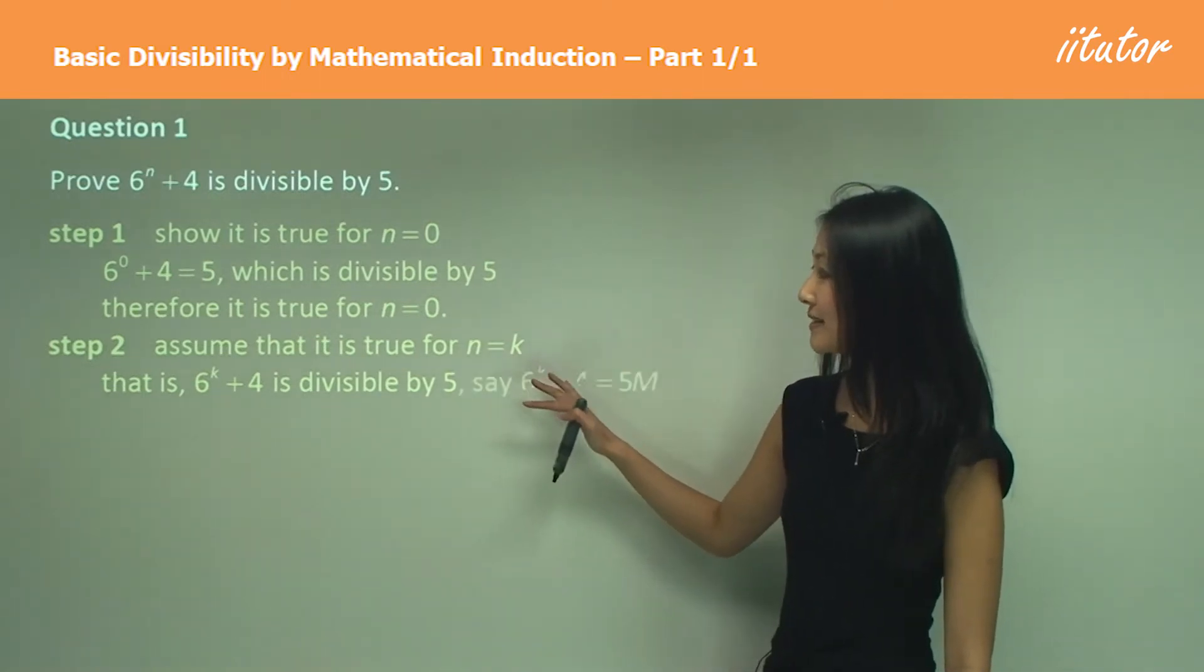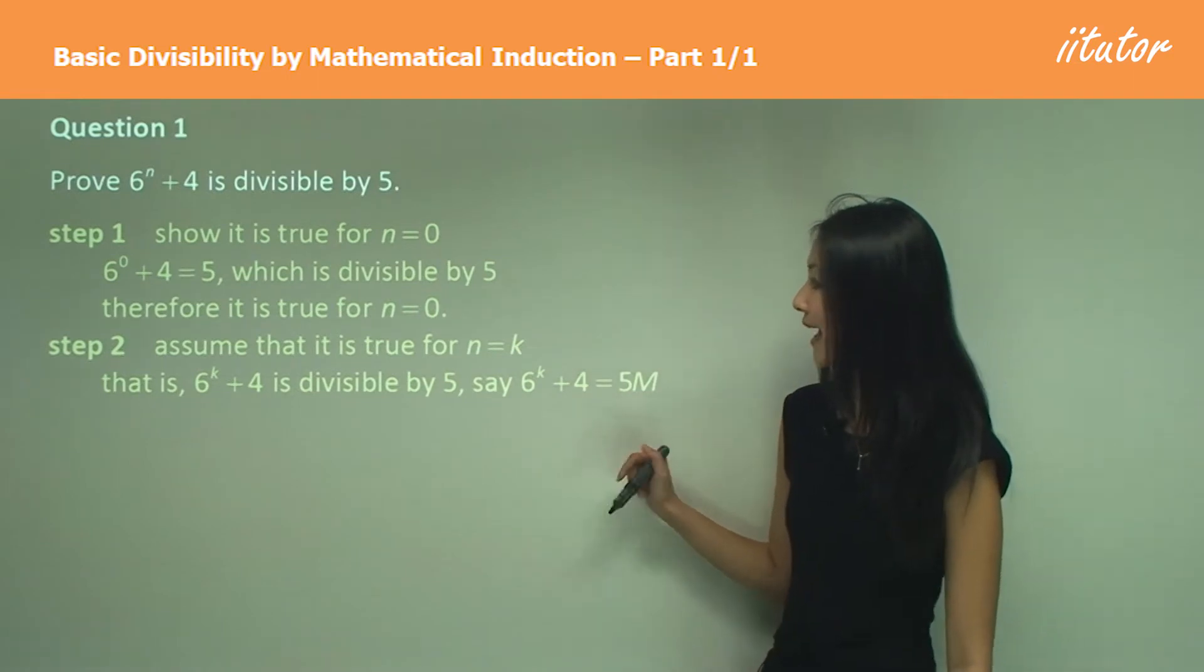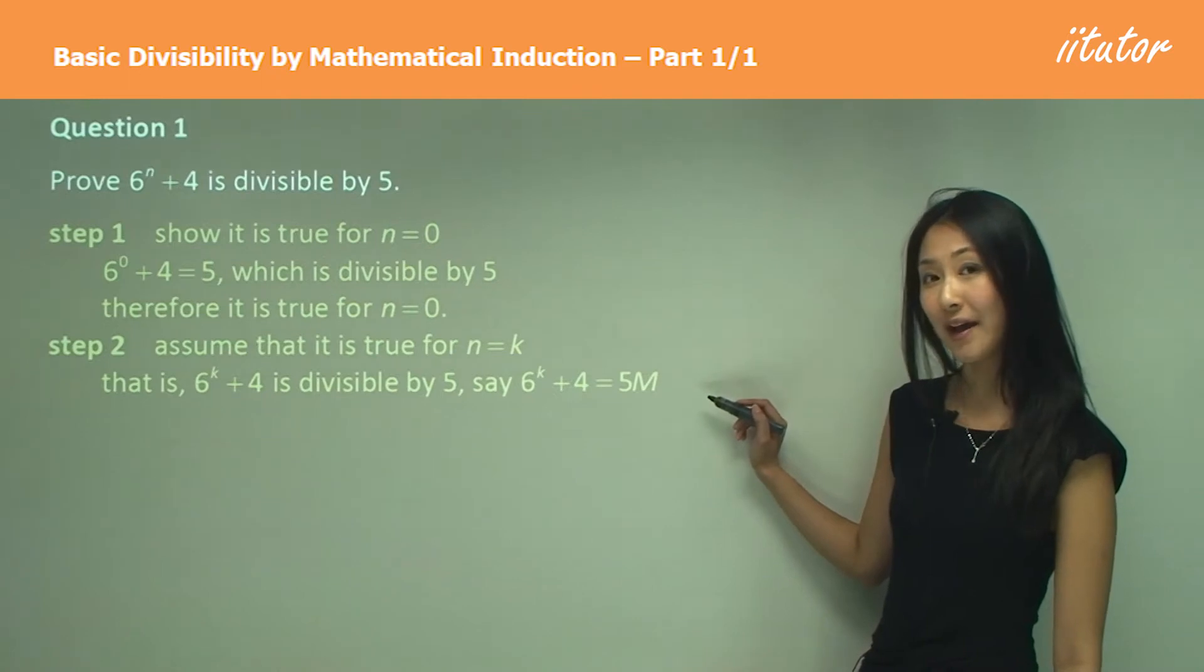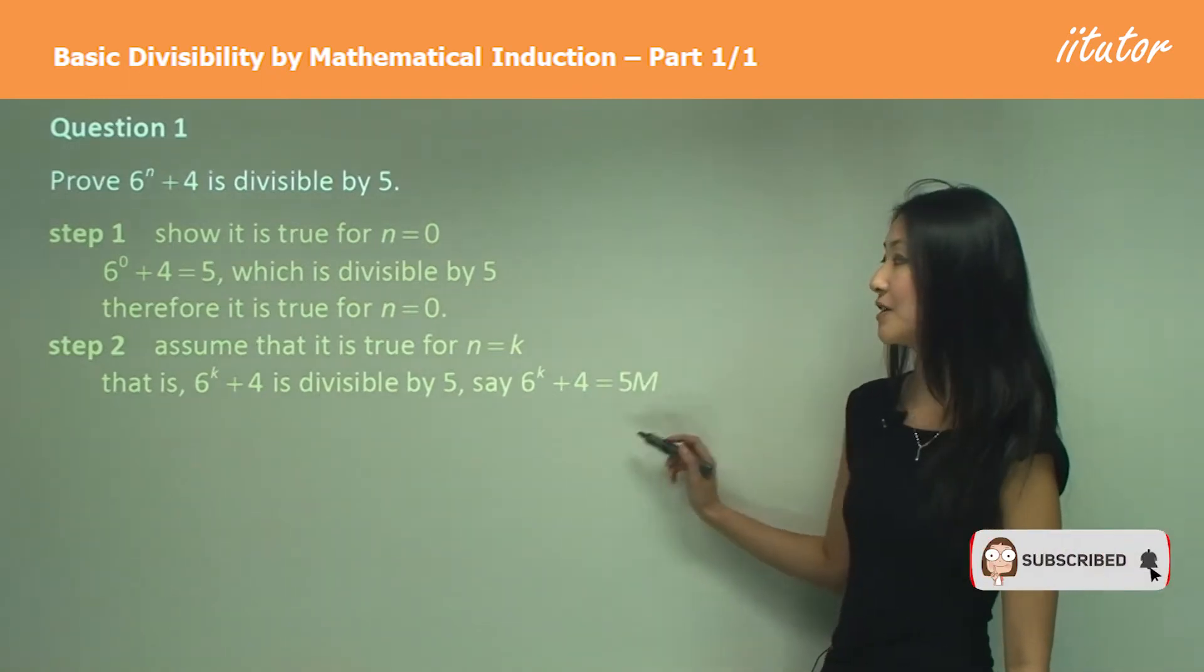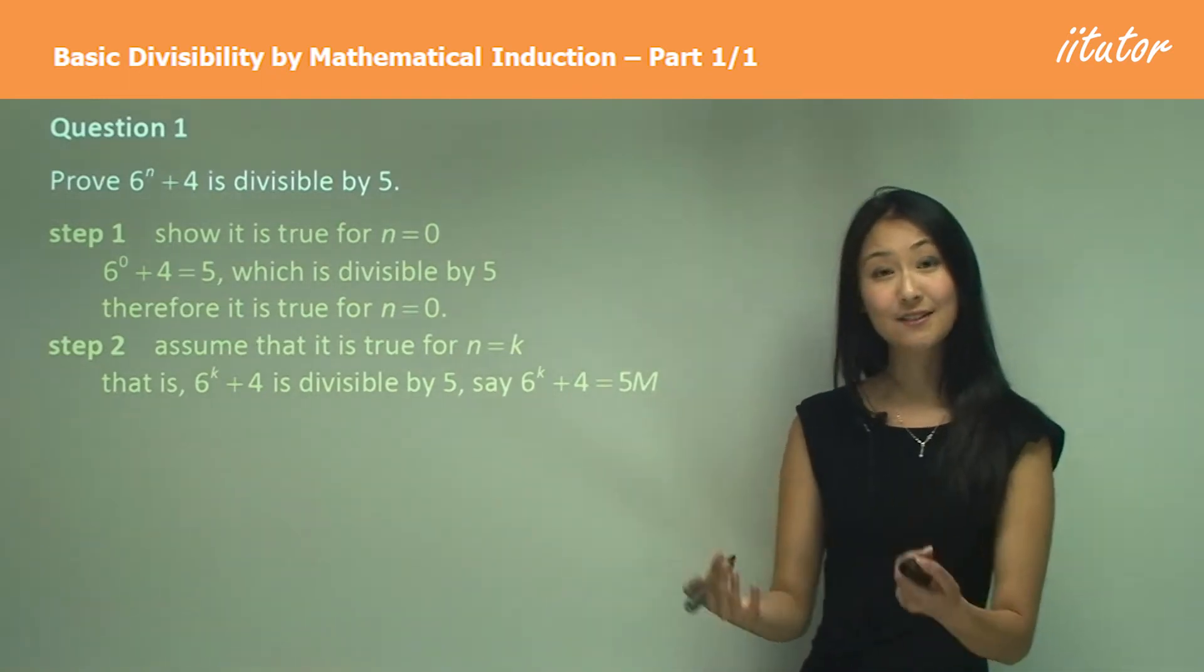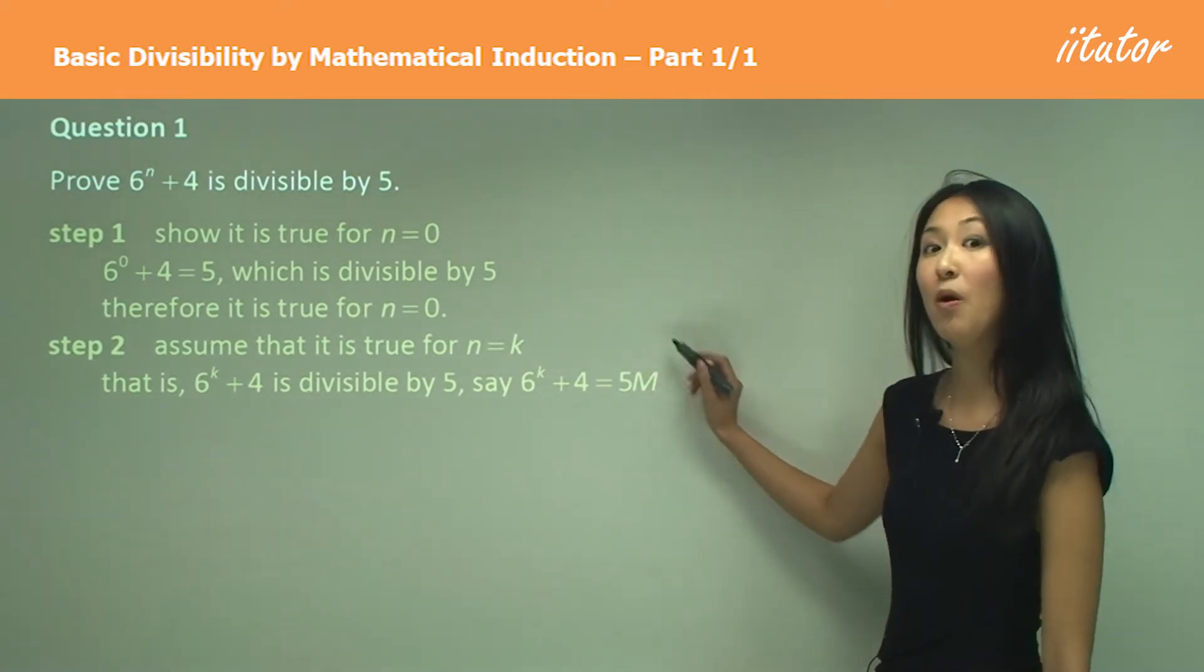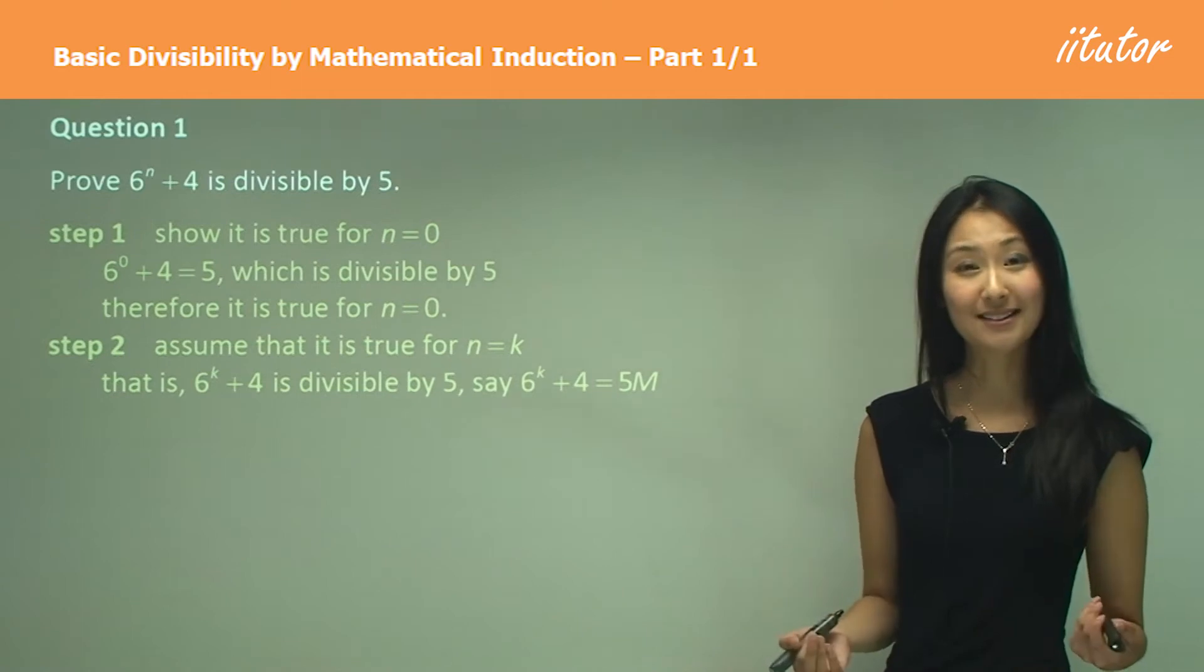So using that assumption, we can say that 6 to the power of k plus 4 equals 5m. So now we make an equation based on that, because if it's divisible by 5, it means it's going to be any integer always multiplied by 5. That makes sense, right?